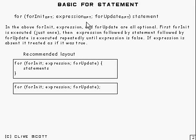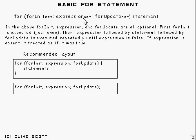This is what the basic for statement looks like. It has three parts which are all optional — marked as subscript OPT. What happens is this: first, the for-init is executed. Then the expression is evaluated — it's Boolean. If it's true, the statement gets executed, followed by the for-update, and then it goes back to the expression. It keeps doing that until the expression is false. You can imagine the for-update has been tagged on to the end, with it going around in a loop.